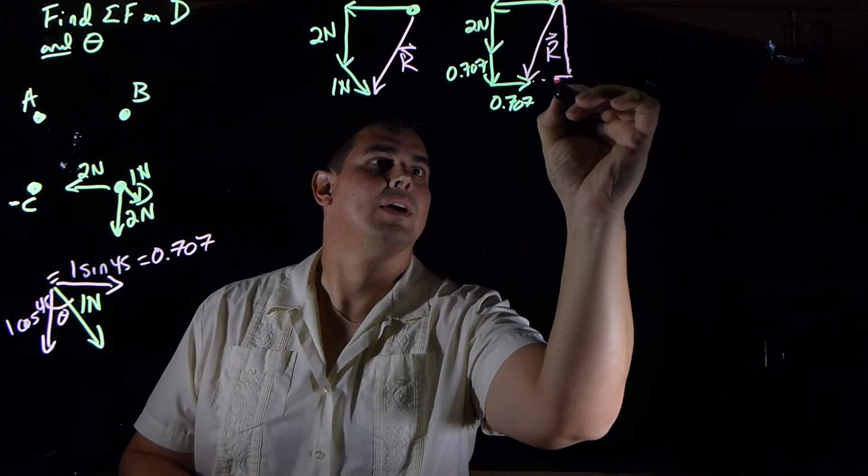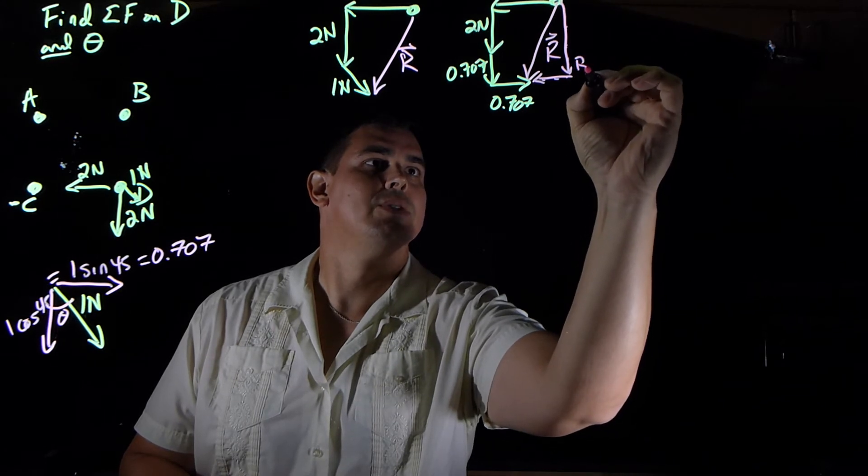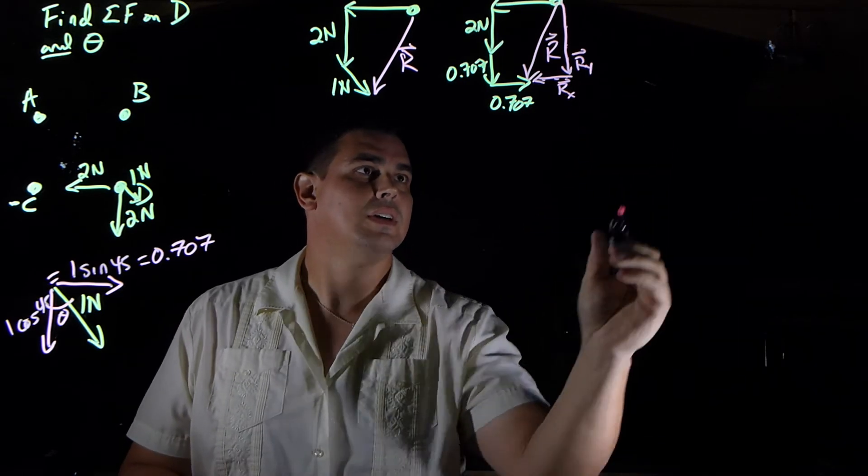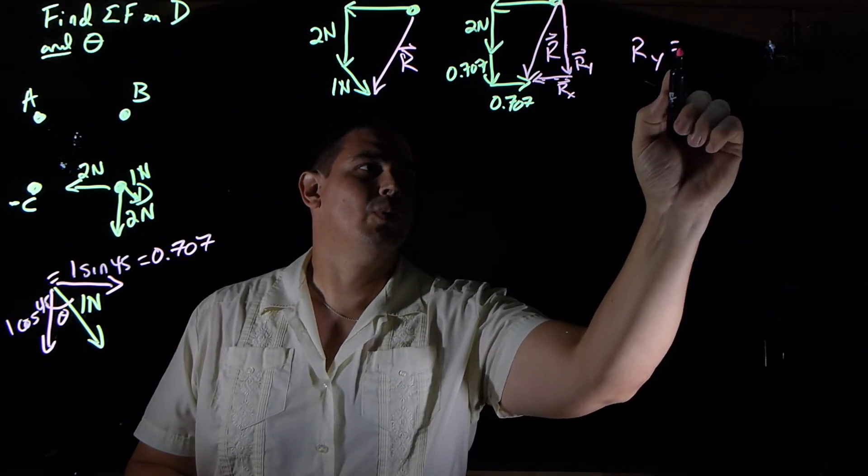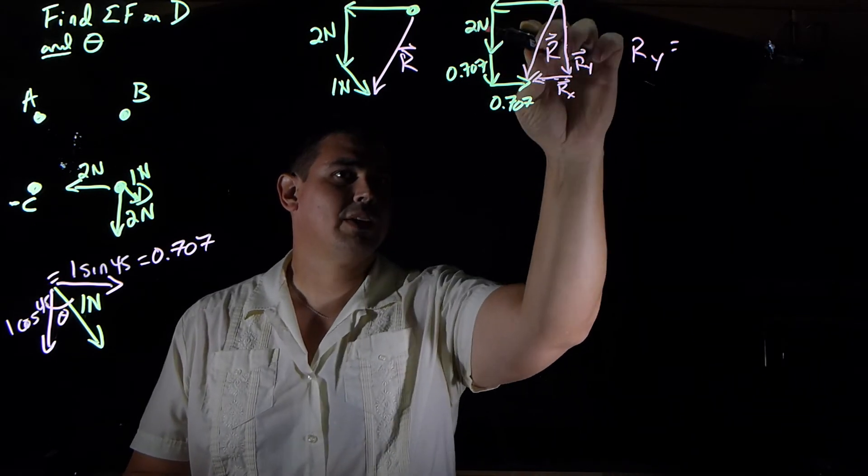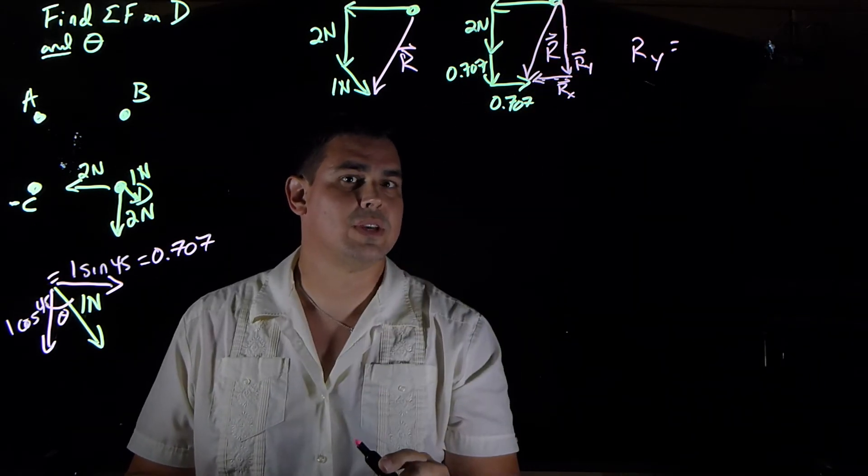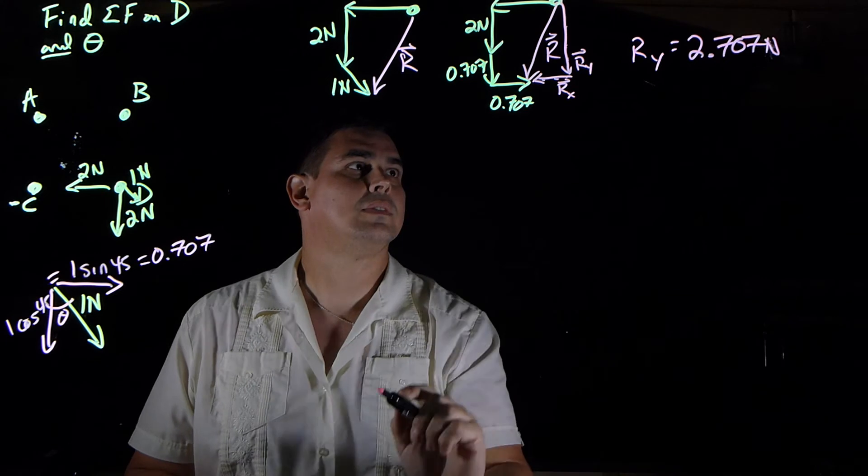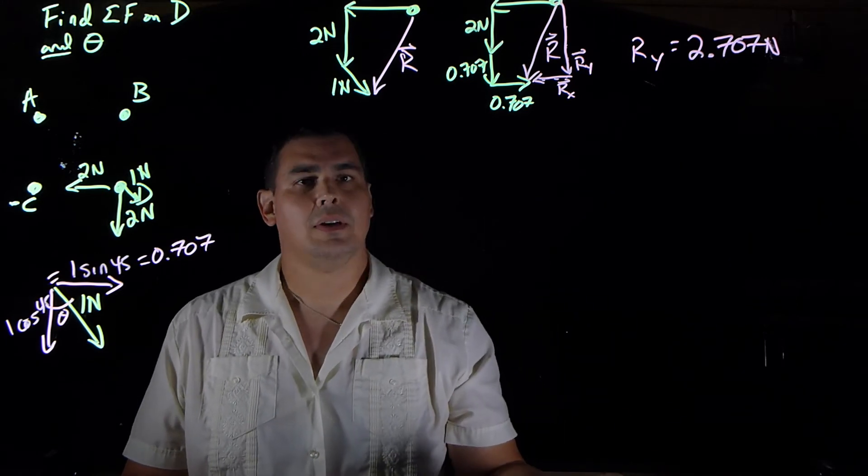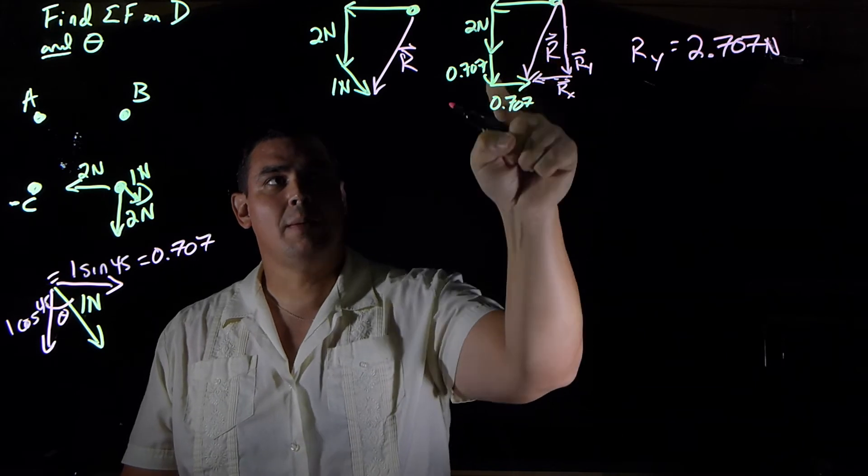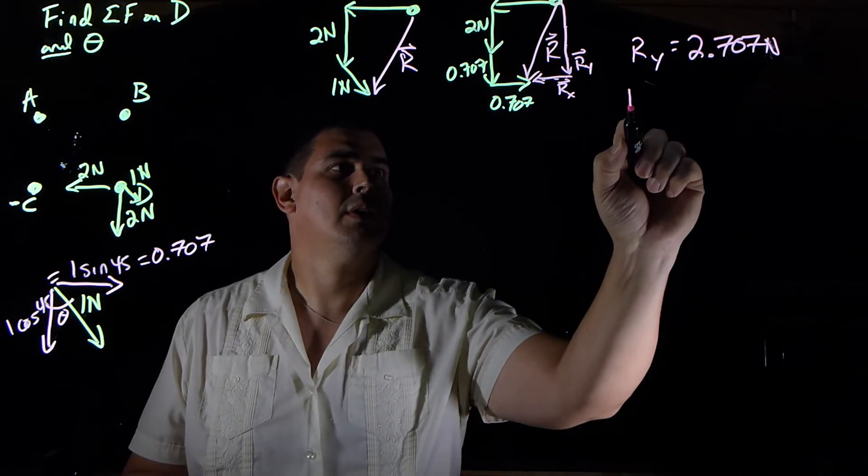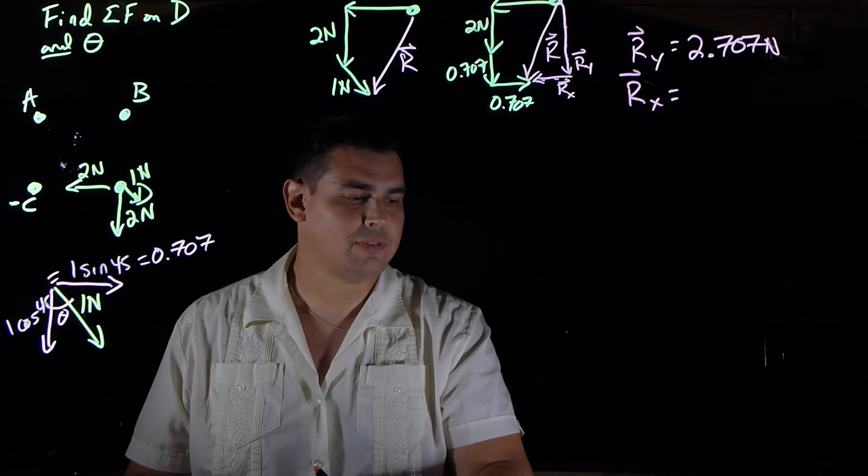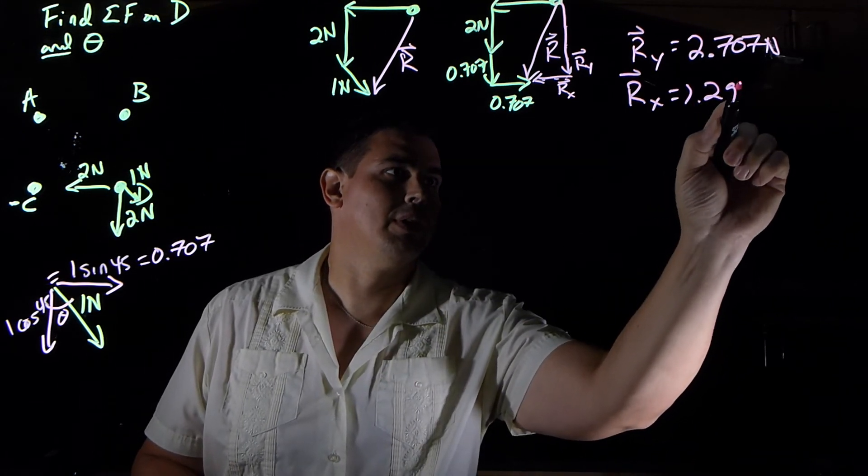So let's figure out how big my resultant is in the y and how big my resultant is in the x. So here's my resultant in the y, and here's my resultant in the x. So my resultant in the y is going to be the sum of these two vectors right here, the 2 and the 0.707. So it's going to be 2.707. And then for the x, see how these two are going opposite ways? So they're going to subtract. So my resultant in the x direction is going to be 2 minus 0.707. And that comes out to 1.293.